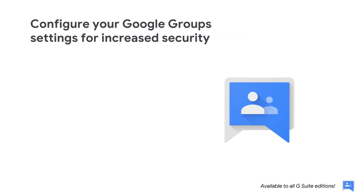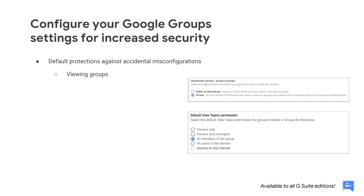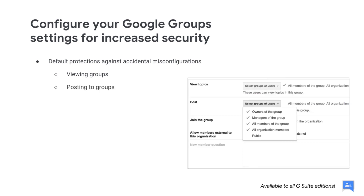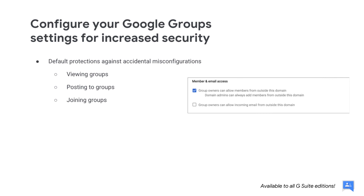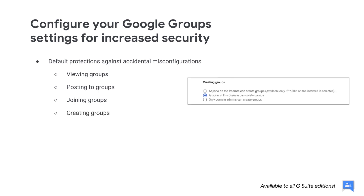Many organizations use Google Groups to connect and collaborate in the workplace. But as with any communication tool, it's important that your settings deliver the right balance between sharing and security. To help prevent data from accidentally being shared, by default, Google Groups' sharing settings are set to best protect privacy: no one outside your domain can view or search groups, post to your groups, or become a group member, and only those within your domain can create groups. You can adjust each of these default settings individually by reviewing and updating the sharing permissions in the Admin Console.